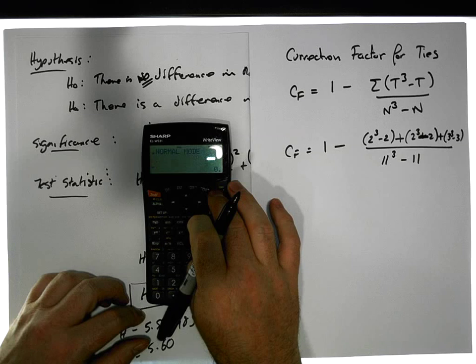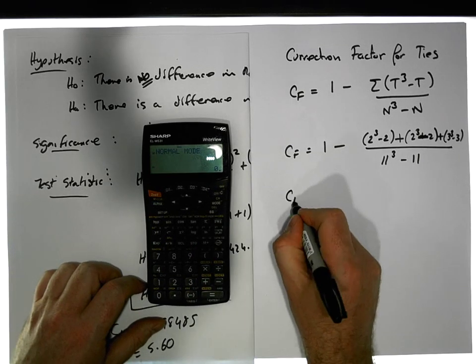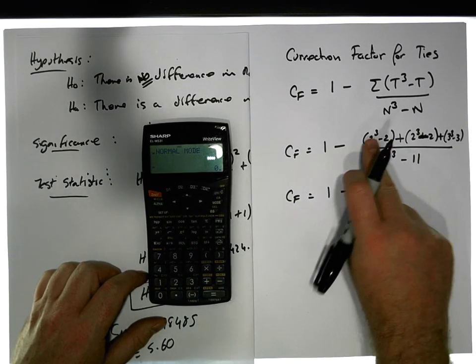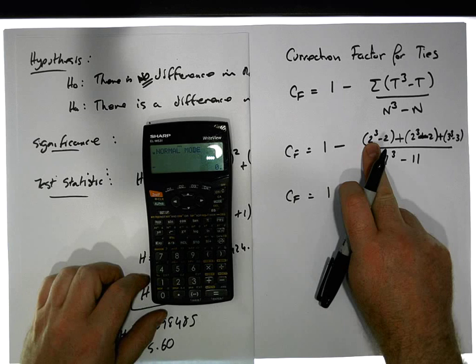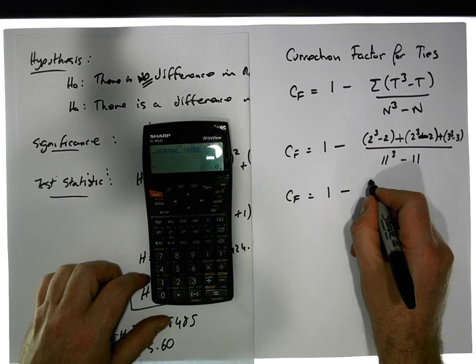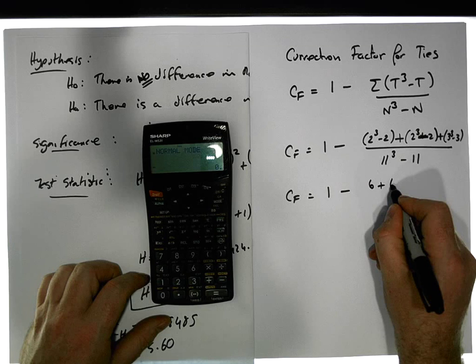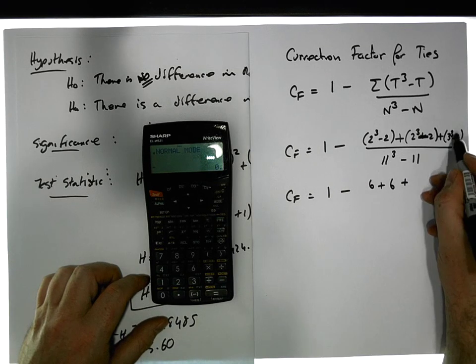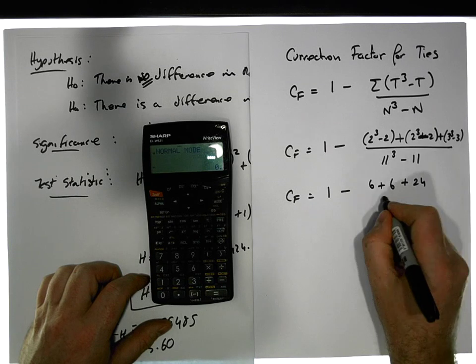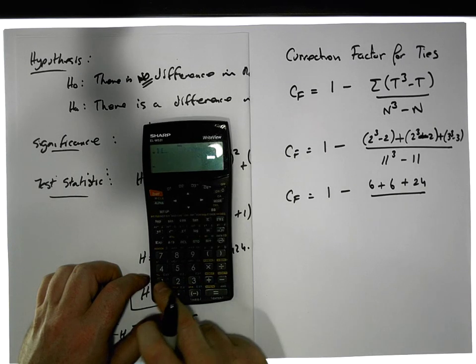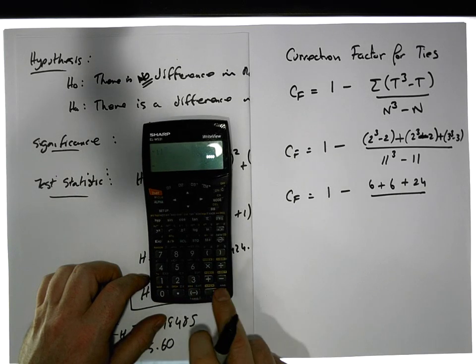Divided by n³. N is 11, so divided by 11³ minus 11. Let's run that on our calculator. CF equals one minus, we've got here 8 minus 2 gives us 6, plus 8 minus 2 gives us 6.